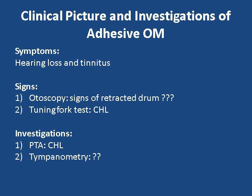Investigations for adhesive otitis media: pure tone audiogram shows conductive hearing loss, and sometimes mixed hearing loss. For tympanometry, different textbooks describe different findings — some state type AS, others state type C tympanogram. By clinical experience, you can find type AS, type C, or type B tympanogram, and even sometimes type A, depending on the extent of the adhesions inside the middle ear cavity.